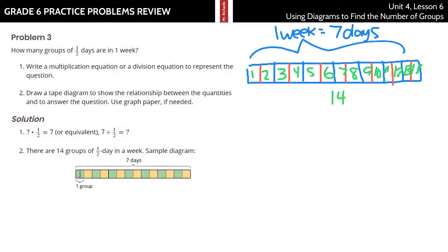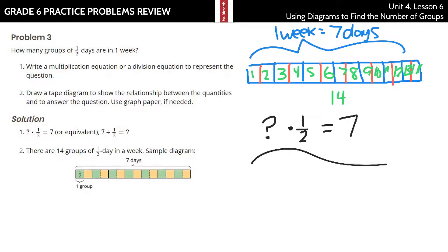So, our solution is 14 half days in a week. Let's come up with some equations: how many half days times one half equals 7? What times a half equals the 7 full days? The other way of looking at this is: I'm taking my 7 days and breaking it into groups of a half. Either way, what it equaled was 14.